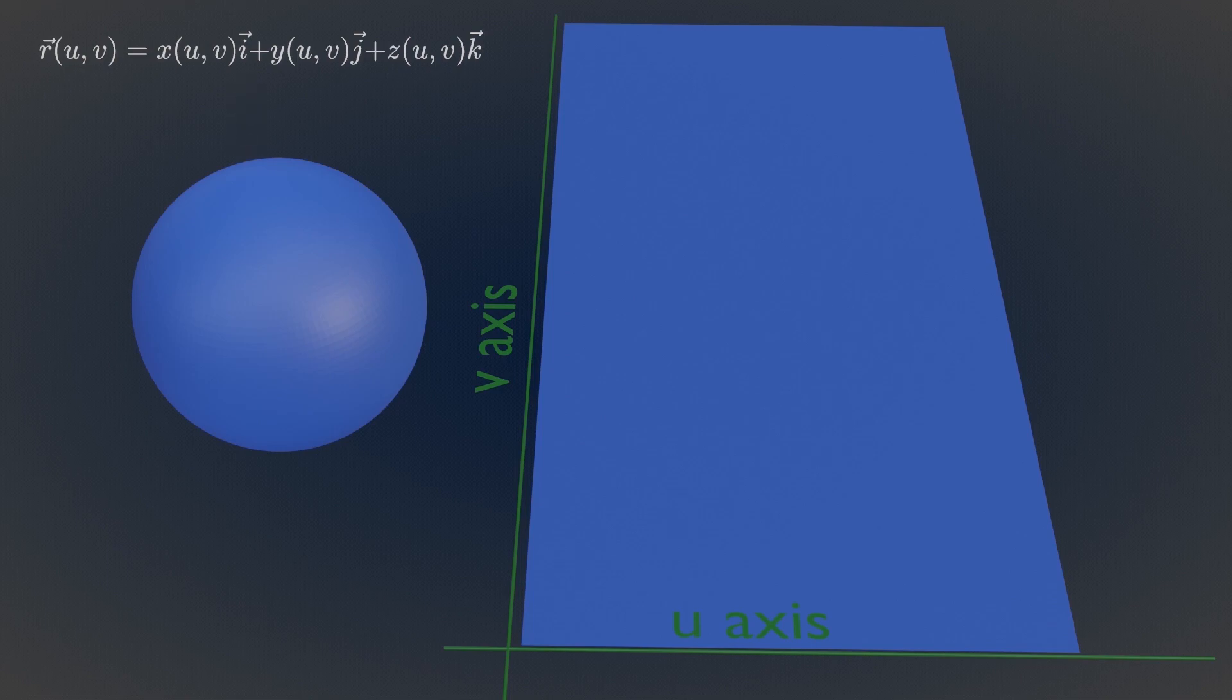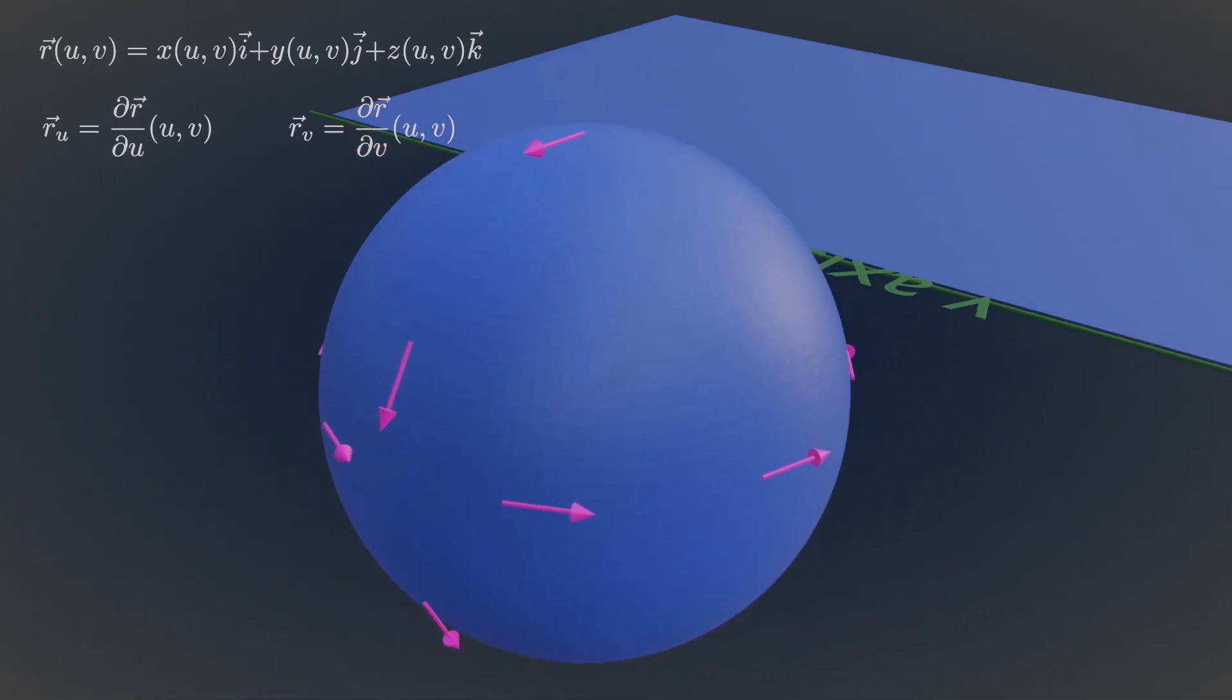If you partial differentiate this parameterization with respect to u and v axes, then geometrically it can be represented in terms of tangent vectors.